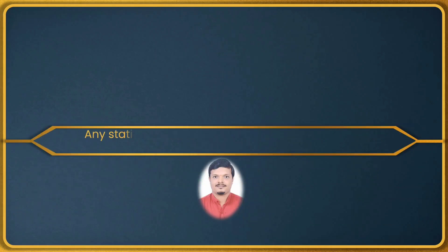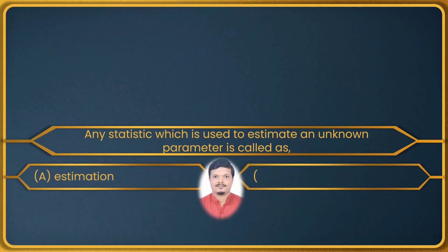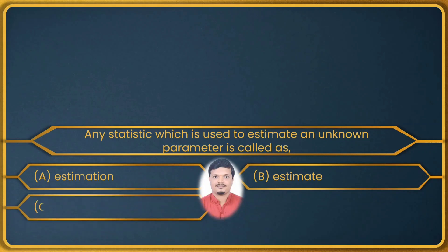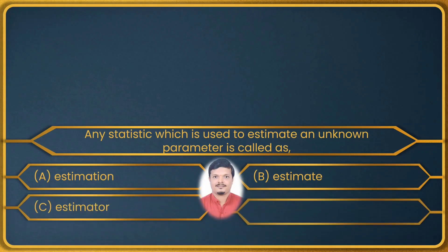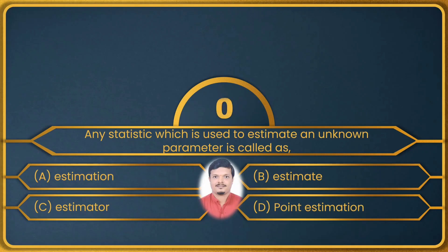Next question: any statistic which is used to estimate an unknown parameter is called — first, estimation; second, estimate; third, estimator; last, point estimation. This is from the statistical inference chapter.